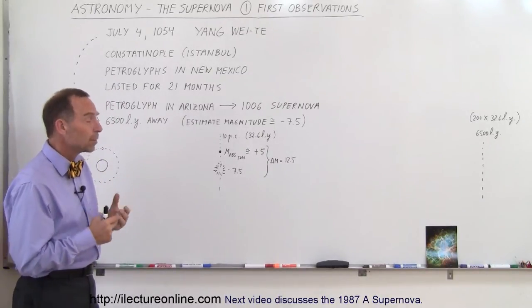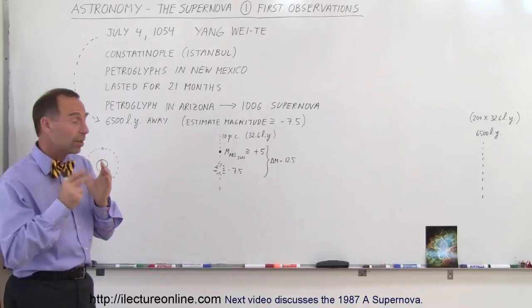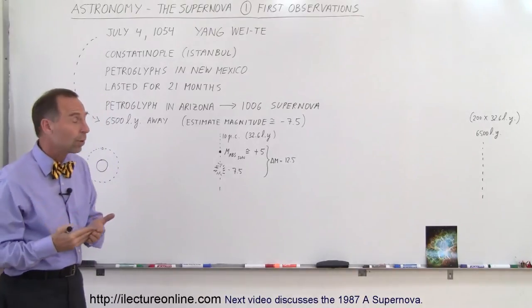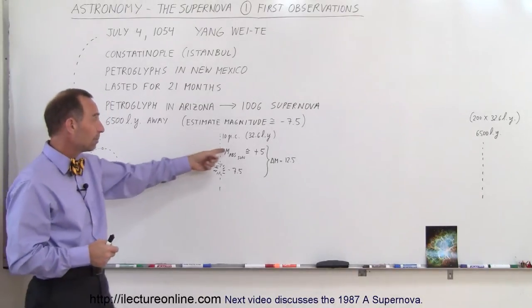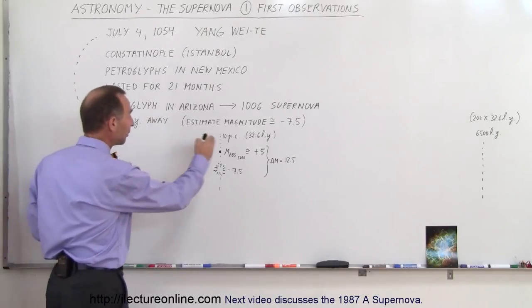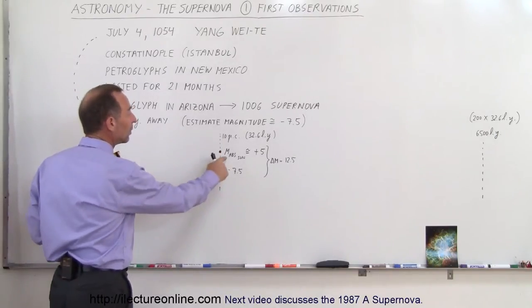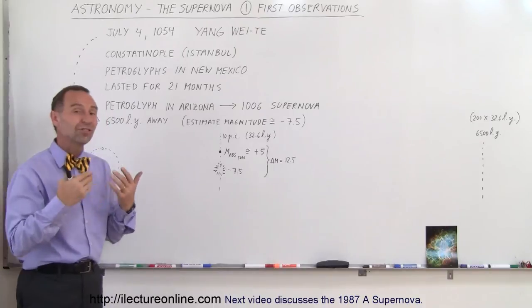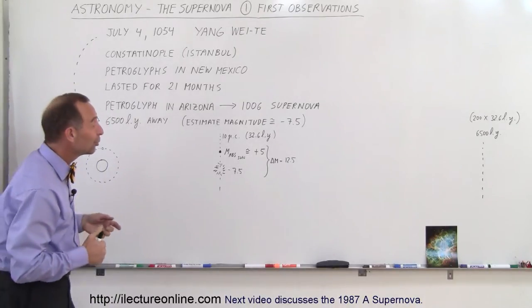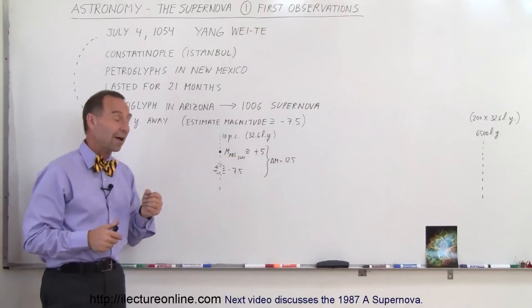Now what does that mean? Well, if you took our Sun and placed the Sun 10 parsecs away, now a parsec is 3.26 light-years, so 10 parsecs is 32.6 light-years. If you took our Sun and placed it 10 parsecs away, it would have an absolute magnitude, which is then equal to the apparent magnitude of about plus 5.